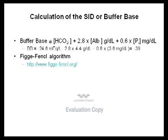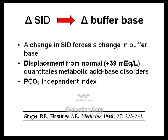A fundamental principle introduced into clinical medicine in 1948 by Singer and Hastings is the relationship between strong ion difference and buffer base. A change in strong ion difference must induce a change in buffer base — this is a one-way physical chemical event. Buffer base can never change strong ion difference; that would be thermodynamically impossible. Displacement from the normal 39 mEq/L quantitates the magnitude of the metabolic acid-base disorder. This is a pCO2-independent index.